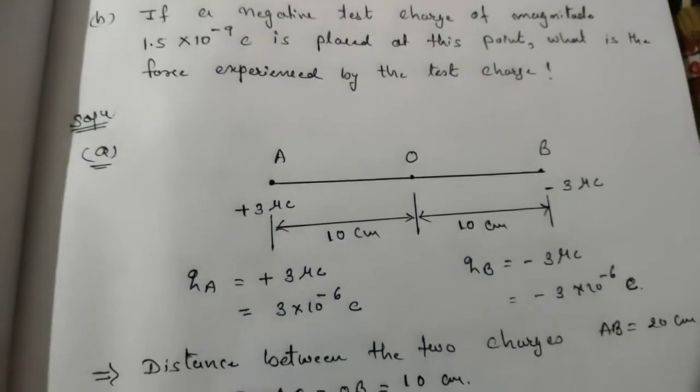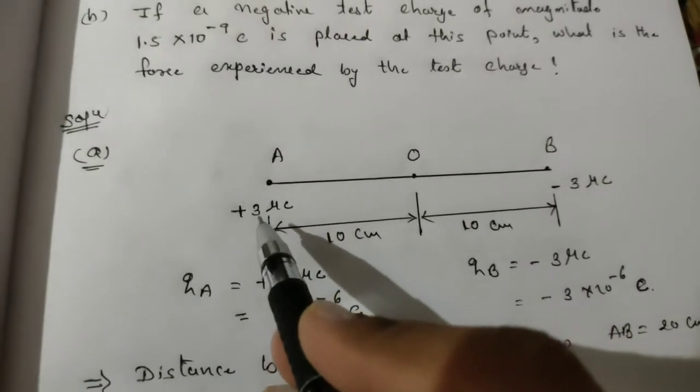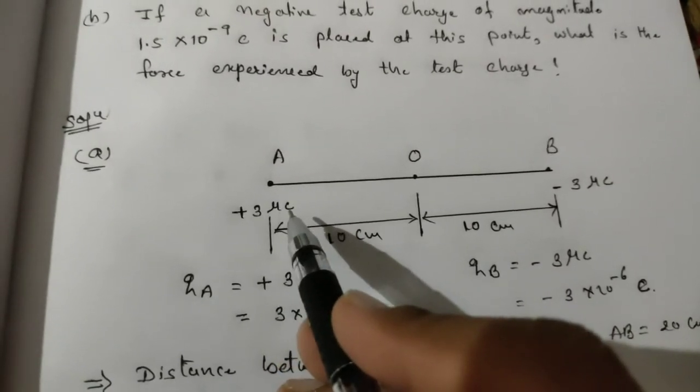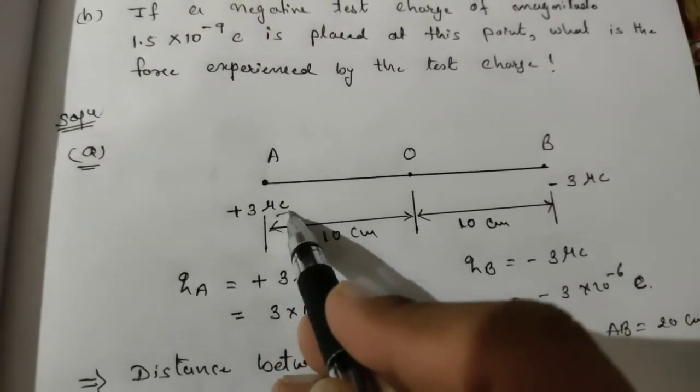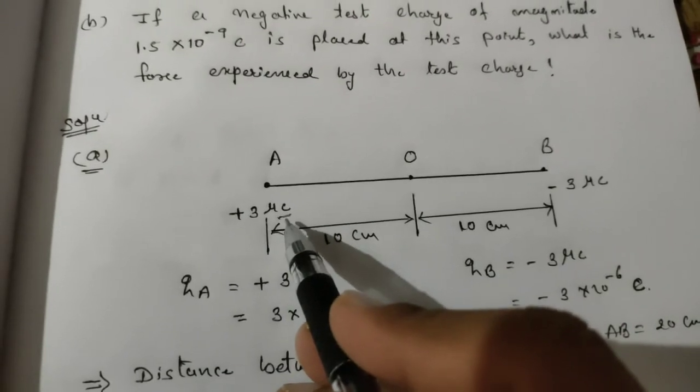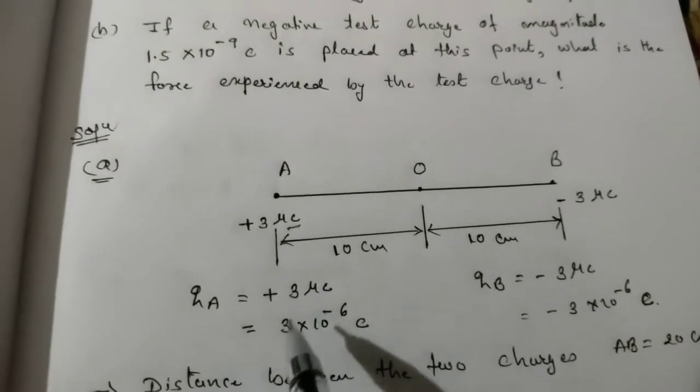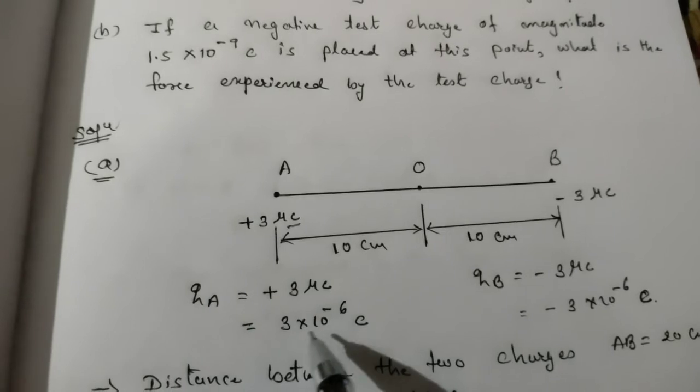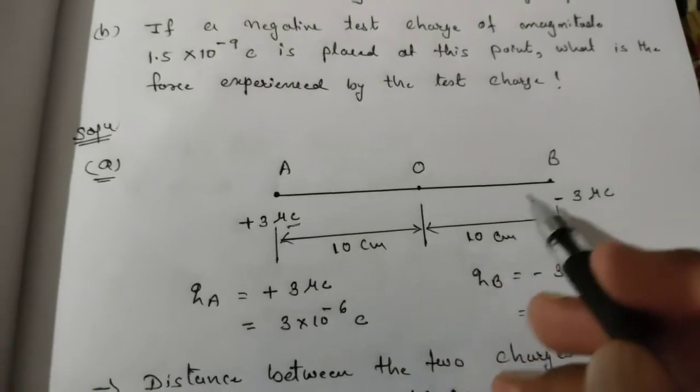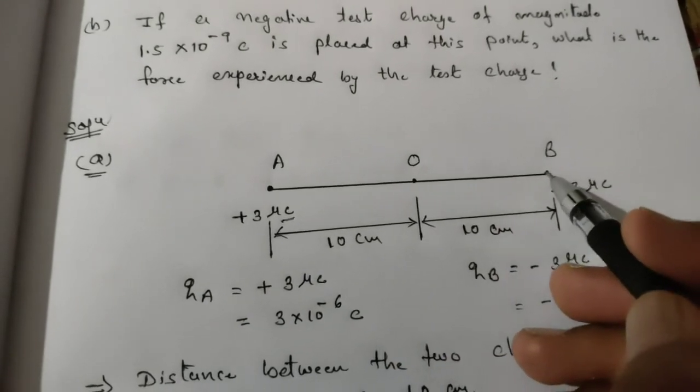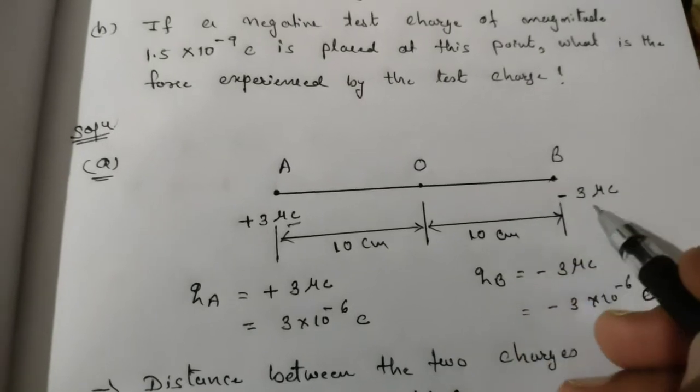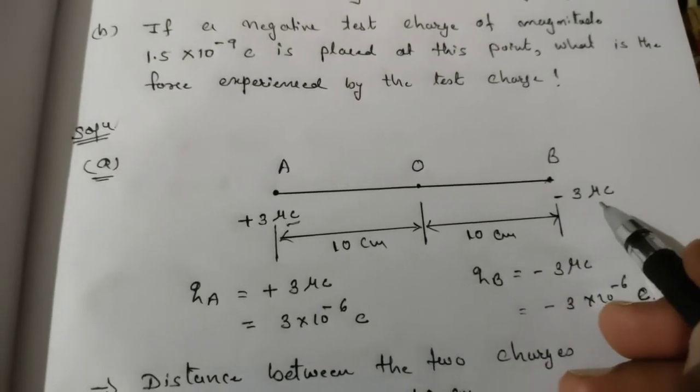Let's see how to solve. First, let's draw the diagram. Point A has +3 microcoulomb charge. We must convert it into basic quantity, so QA = 3 × 10⁻⁶ coulomb.